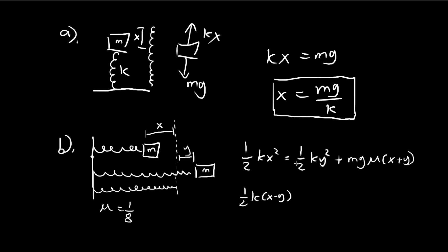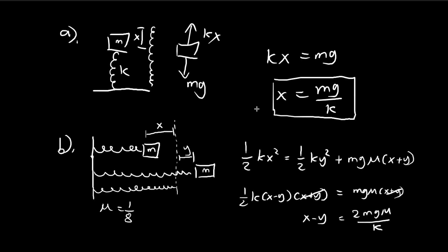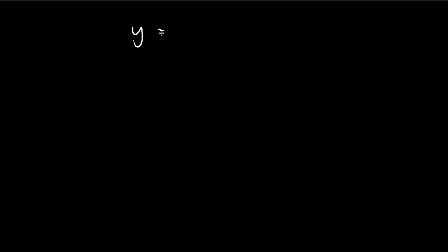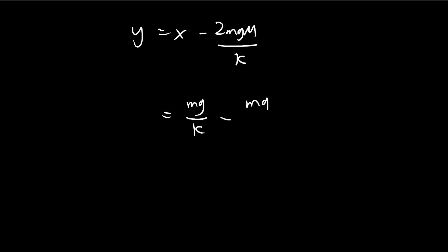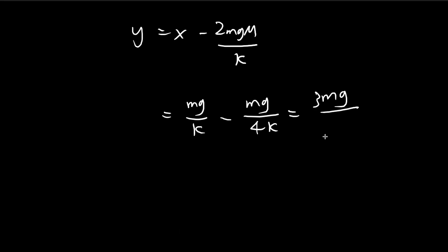Now we solve this equation to find y. Factorizing and moving everything to the left-hand side, since x and y are both positive by definition, we can simplify. Moving the constants to the other side gives 2mgμ divided by k. So y is equal to x minus 2mgμ over k. Substituting x = mg/k and μ = 1/8, this becomes mg over 4k, so our final answer is y = 3mg over 4k. This is the answer to part b.